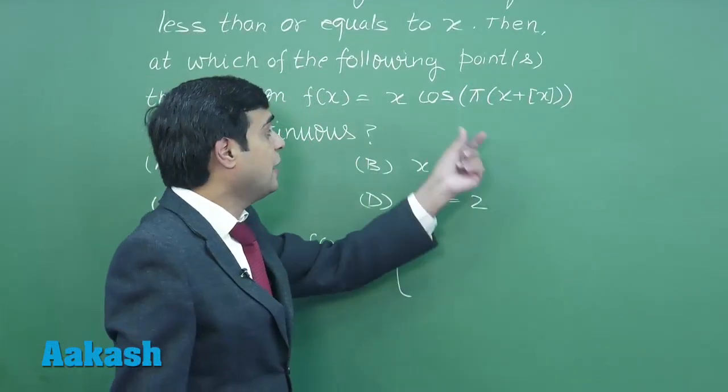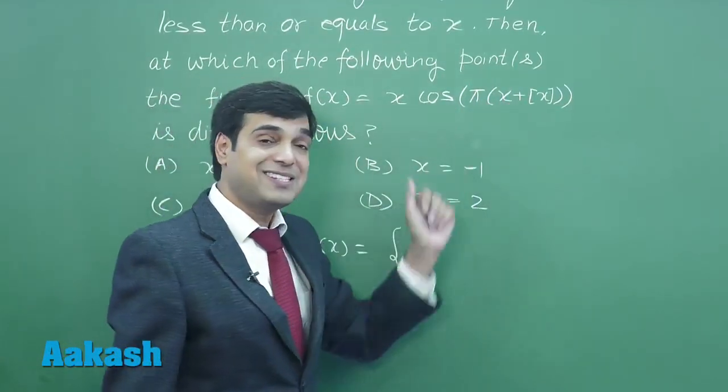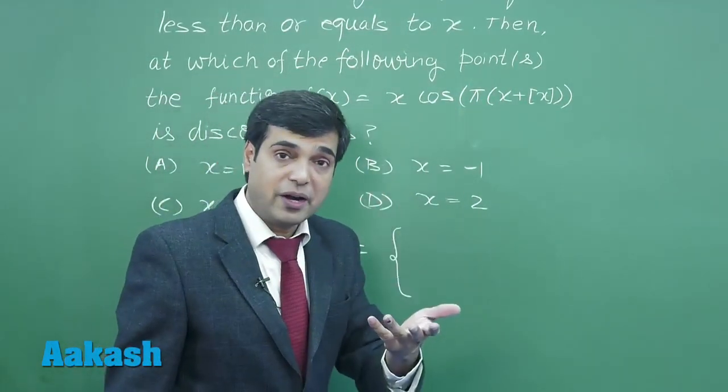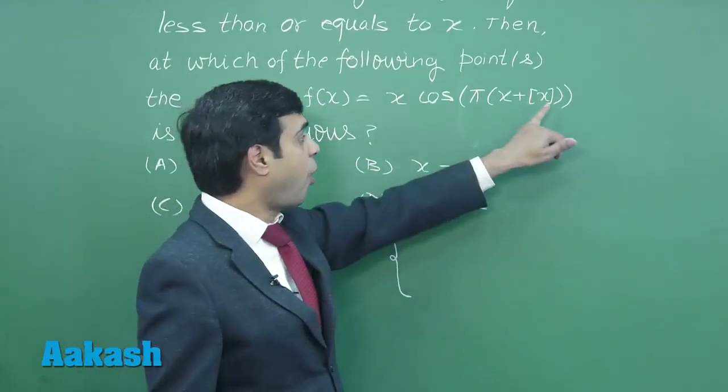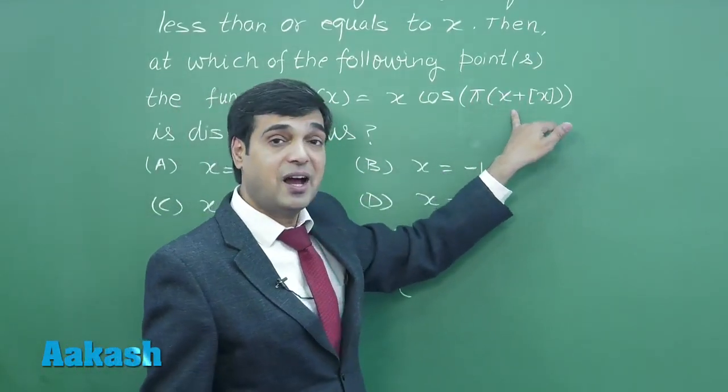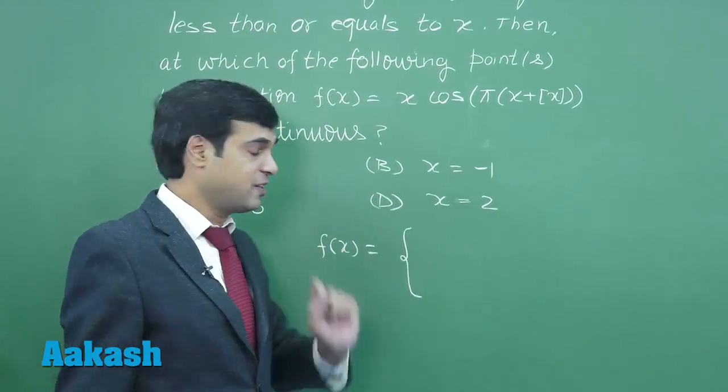If it's an even multiple of pi, then even multiple of pi plus theta will give me in the first quadrant, so it will be positive. Odd multiple of pi plus theta means third quadrant, so it will be negative.